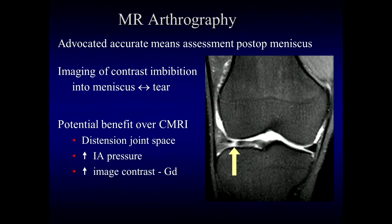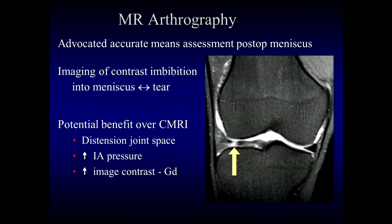Because of problems with conventional MRI assessment of the postoperative meniscus, some investigators advocated the use of MR arthrography as a more accurate means of assessment. With MR arthrography, contrast material is introduced into the articulation, and we look for contrast imbibition or extension into the substance of the meniscus as an indication of a recurrent or residual tear. The benefits of MR arthrography include distension of the joint space, increased intraarticular pressure from the introduced fluid, and increased image contrast afforded by T1 shortening associated with intraarticular gadolinium.